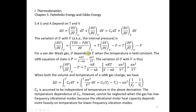For a van der Waals gas, U depends on volume when temperature is held constant. The van der Waals equation is P = nRT/(V - nb) - n²a/V². A and B are van der Waals parameters. The variation of U with V is T·(δP/δT)_V minus P, which gives nR/(V - nb) minus P. The first and second terms cancel, leaving n²a/V².